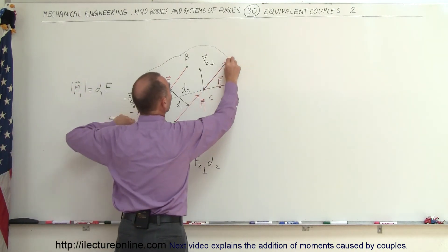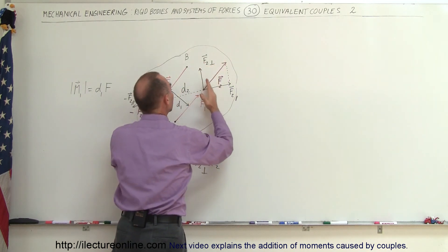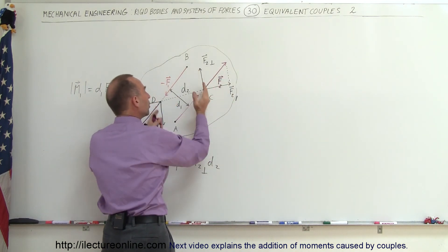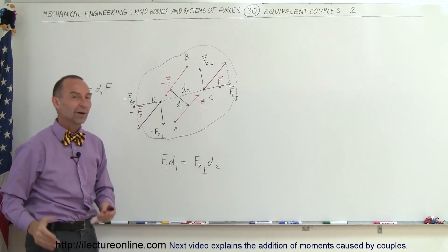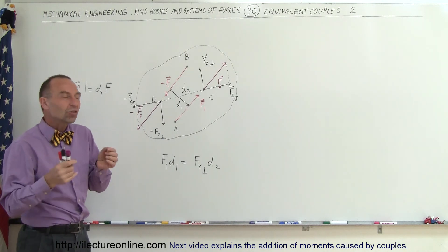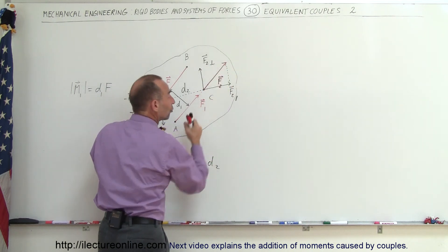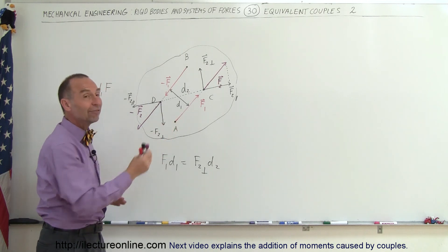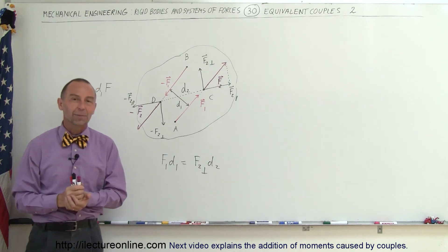We can continue that in perpetuity: the farther out we go, the smaller the perpendicular component will get and the bigger the distance between them will get, in such a way that the product of the perpendicular component and the distance between the two will always equal the original F1 times d1. Therefore they're called equivalent couples, meaning the moment doesn't change when we move the forces to a new location — as long as we move the force and its negative the same distance along the line of action.